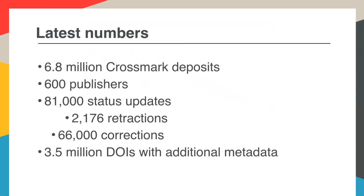Just to wrap up, I'll give you some numbers. We have nearly 7 million DOIs that have Crossmark metadata deposits, representing 600 of our members participating in Crossmark. Of those nearly 7 million Crossmarked DOIs, 81,000 have some kind of status update — just over 2,000 are records of retractions in our database, and 66,000 corrections have been reported so far. About half of those 6.8 million Crossmarked DOIs have some kind of additional metadata in the 'more information' box, so about half of members are making use of that to display other information to readers.